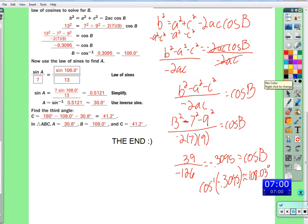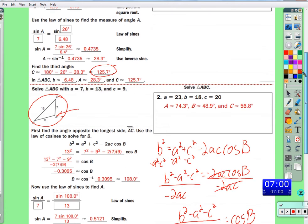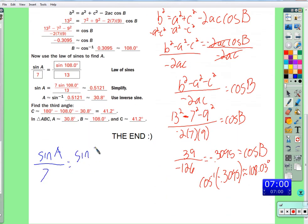From there, now we know angle B. So you know angle B, side B, and side A and side C. We set up the sine of A. Let's go with A. Sine of A over 7 equals the sine of 108.03 degrees over 13. Sine of A equals 7 times the sine of 108.03 over 13. So we'll take the inverse sine of that number. So I got that A is about 30.8 degrees.